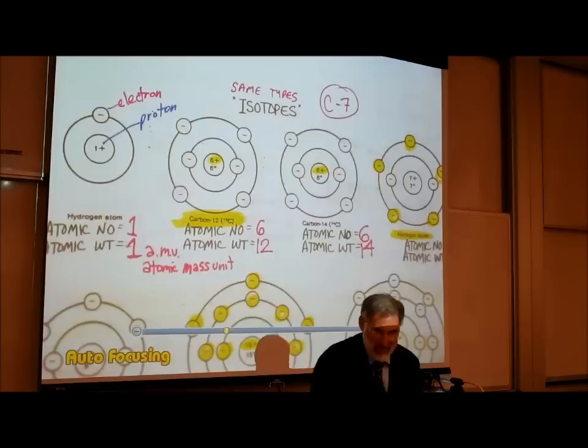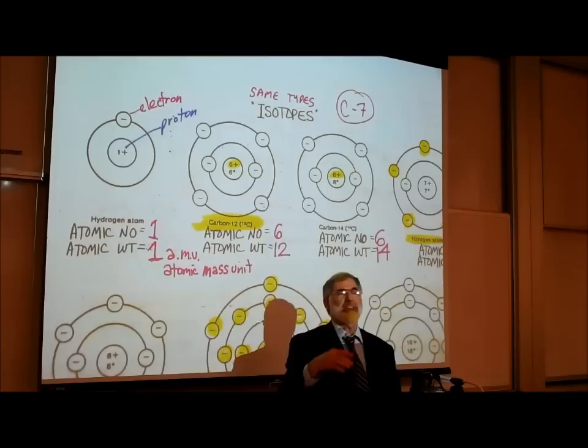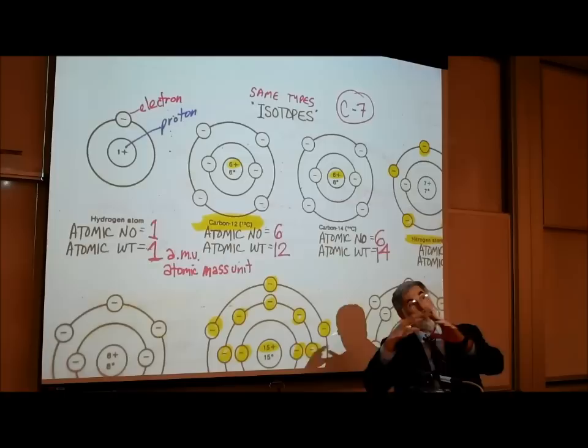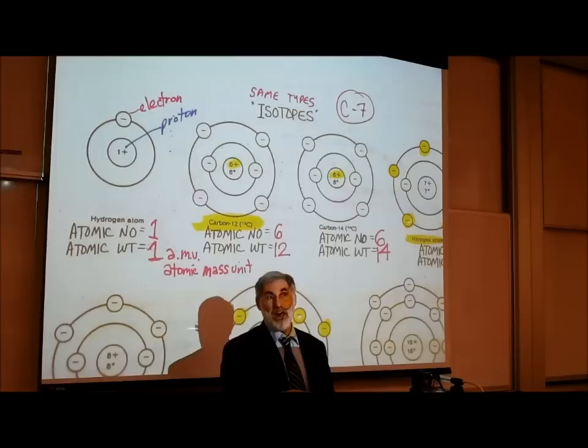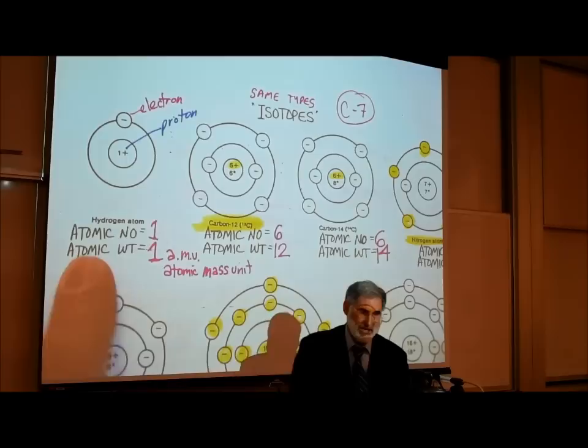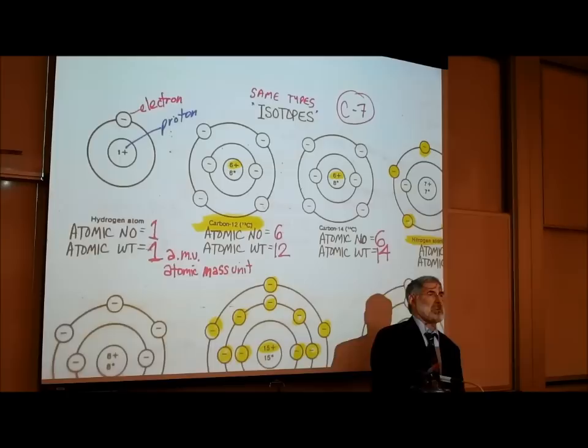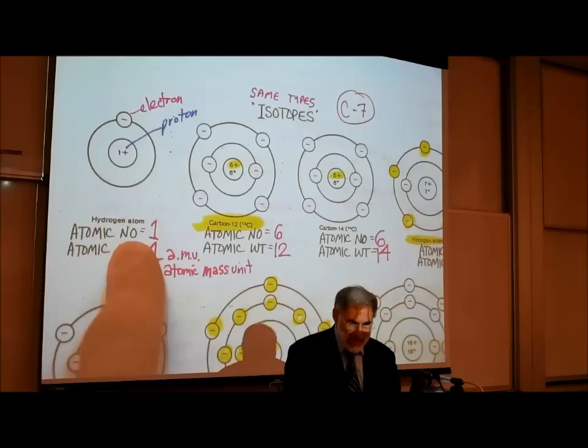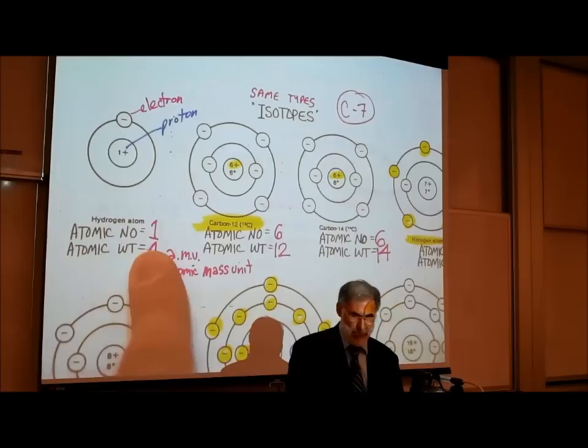This is actually a hydrogen atom. Remember we said that gold atoms look different from hydrogen atoms, which look different than uranium atoms, which look different than iodine atoms. Looking at a hydrogen atom, it has one positively charged proton in its nucleus. Since a hydrogen atom has one proton, we say that it has an atomic number of one.